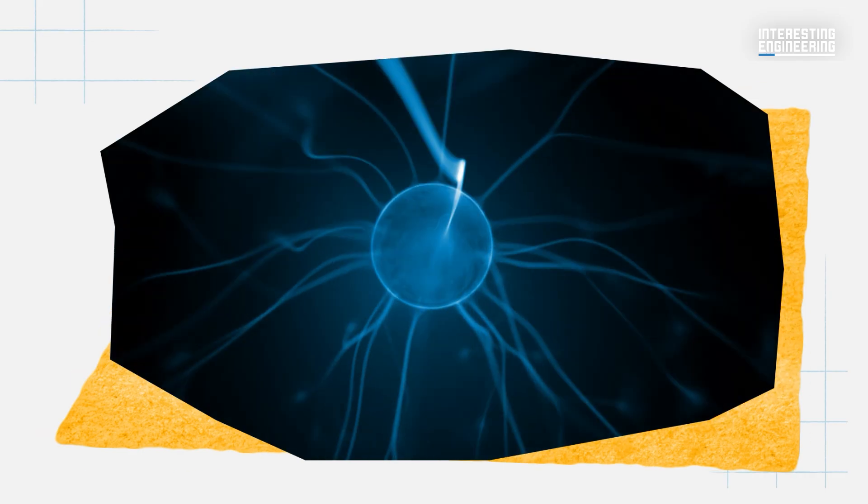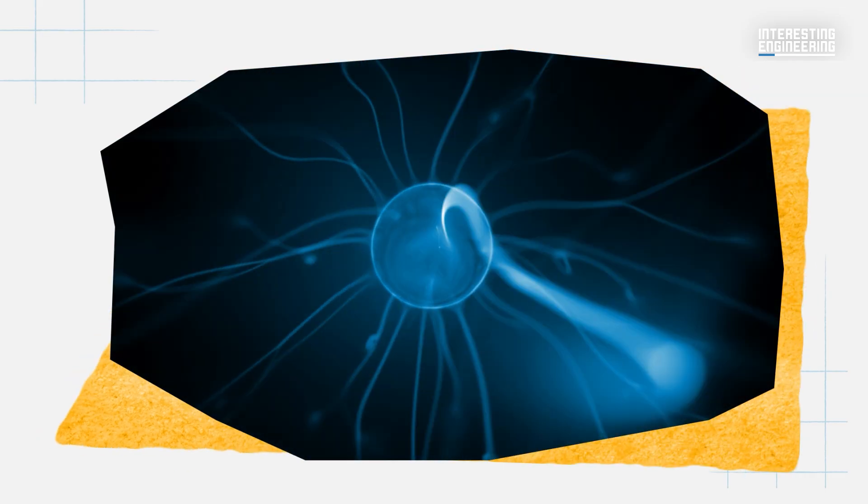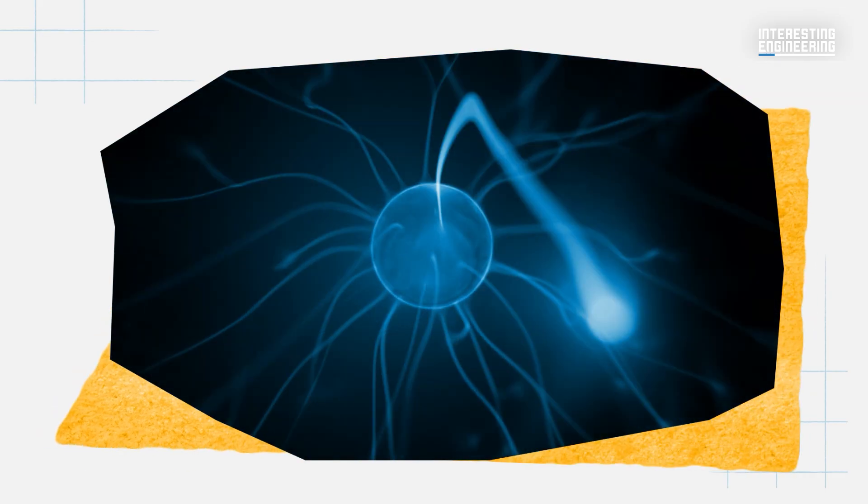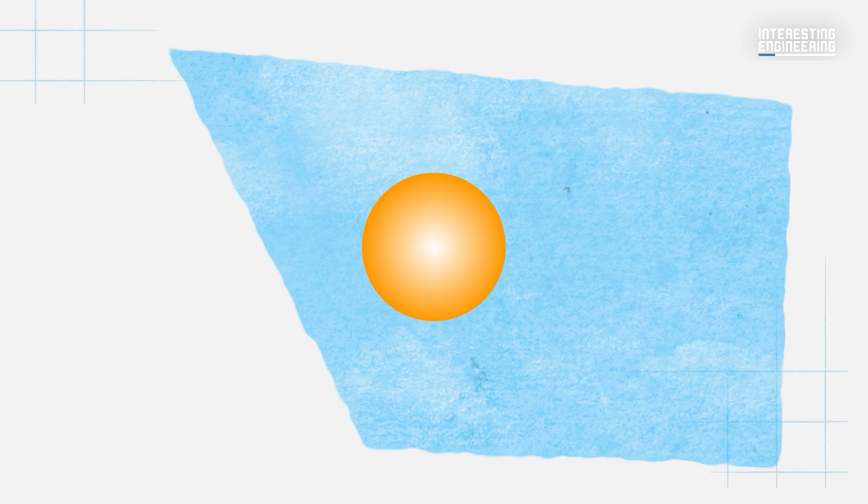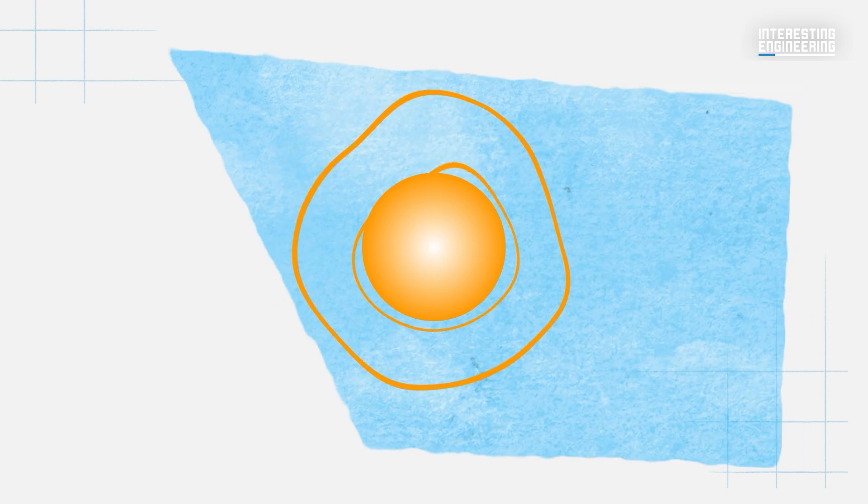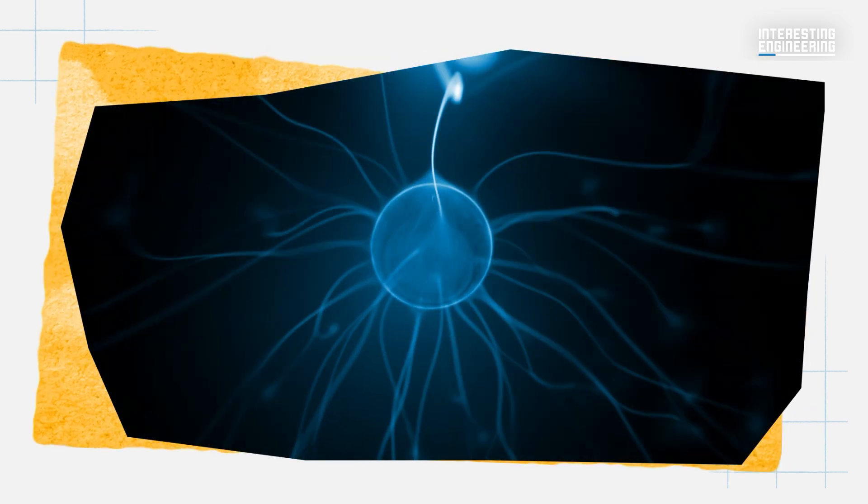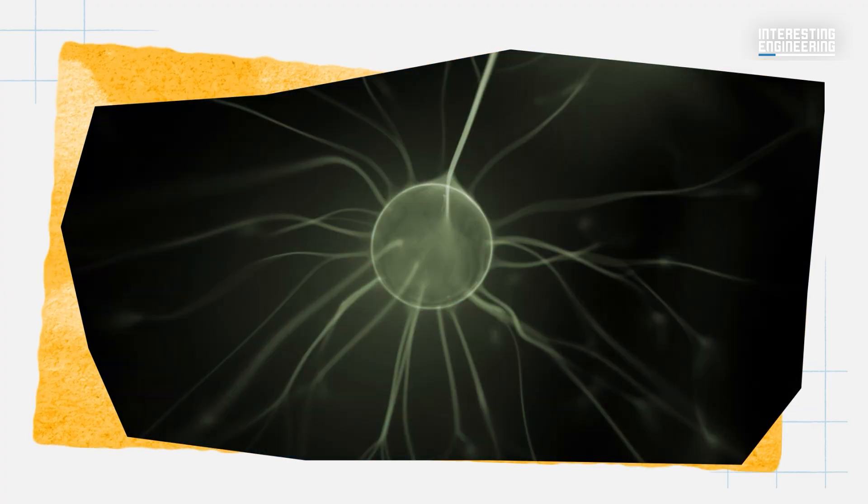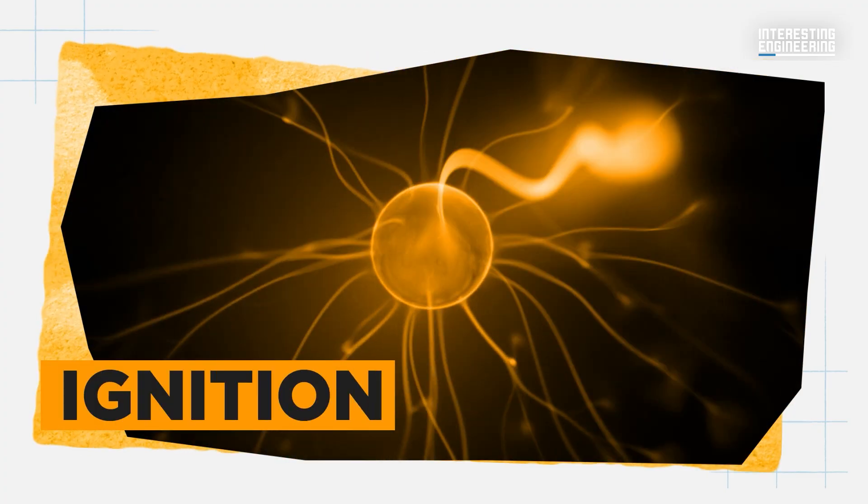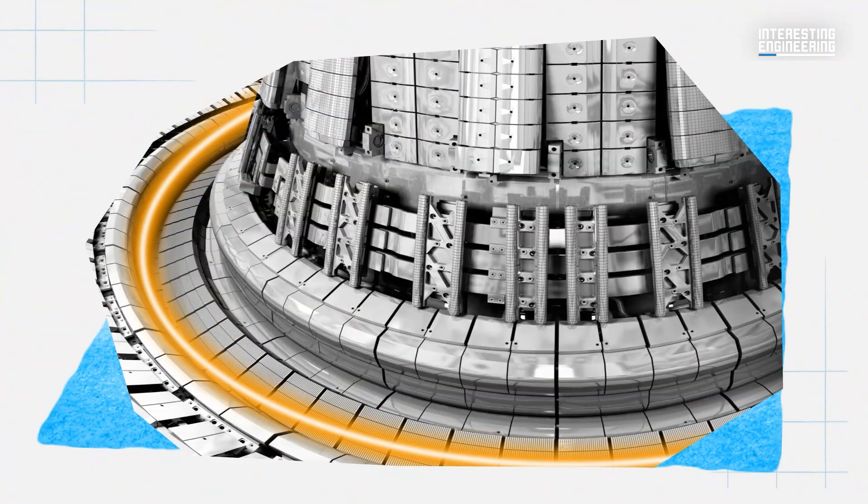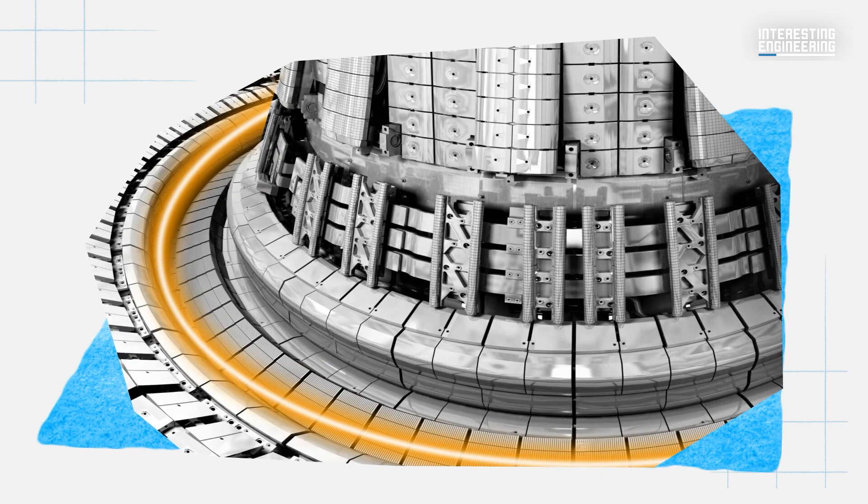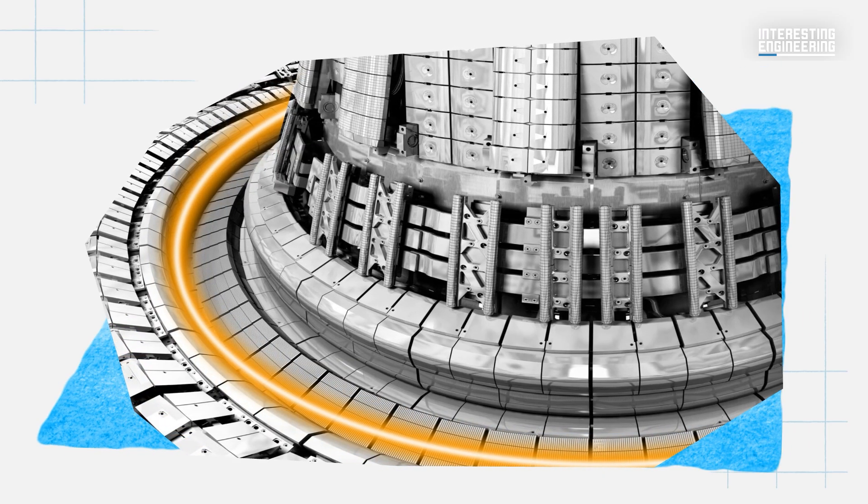The plasma cools when the energy is released, slowing down fusion reactions. The newly formed helium nucleus provides heating power for the reaction. If the heating power exceeds the plasma's cooling down, a state called ignition is reached, where the reaction becomes self-sustaining and can run continuously to generate energy. Reaching ignition had been a major hurdle for nuclear fusion technology until recently.